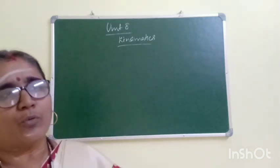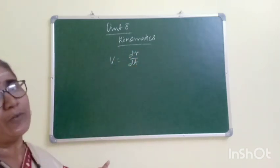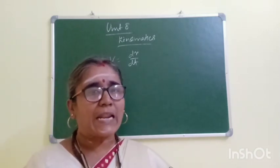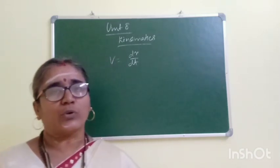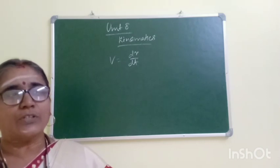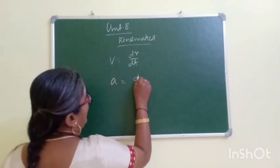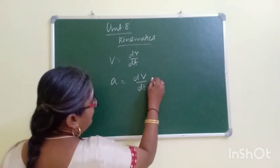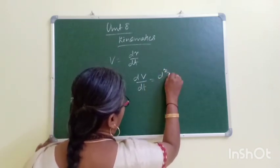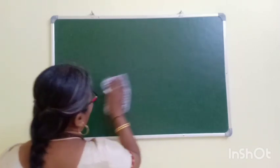Velocity is equal to rate of change of displacement. Displacement is a vector quantity — it has direction. Distance is a scalar quantity. Velocity is a vector quantity. Now, acceleration: we will do the rate of change of velocity. Rate of change of velocity is d²r/dt². Displacement is a vector quantity, velocity is a vector quantity, and acceleration is a vector quantity.